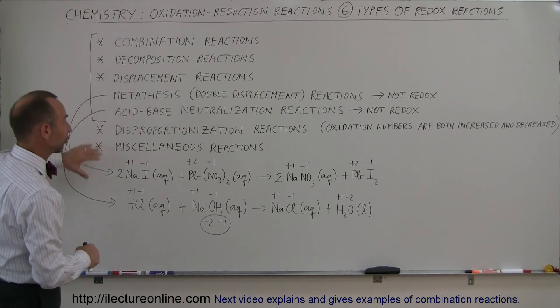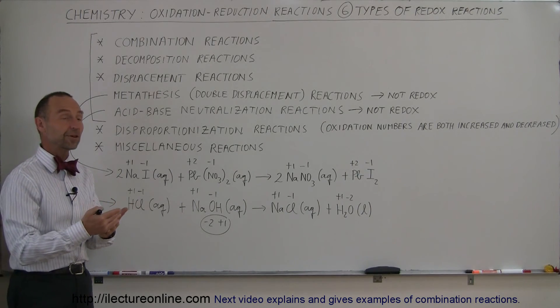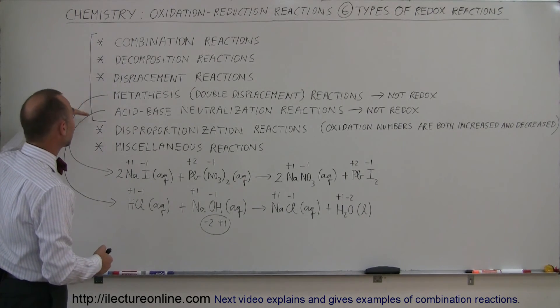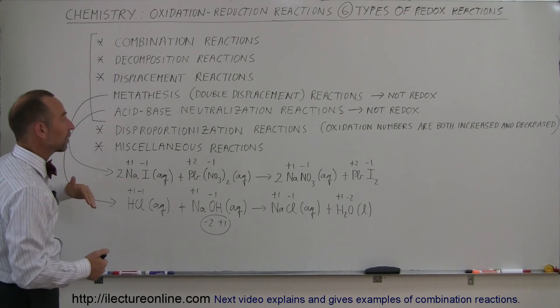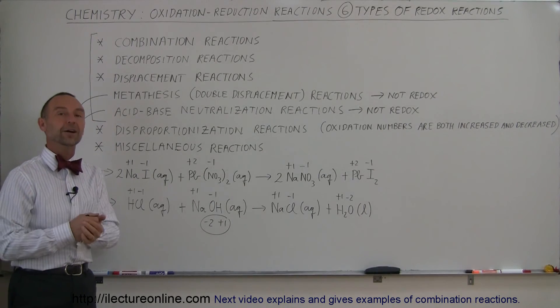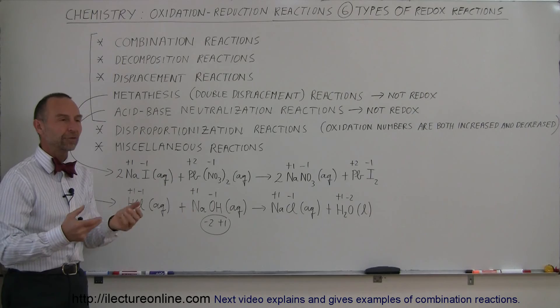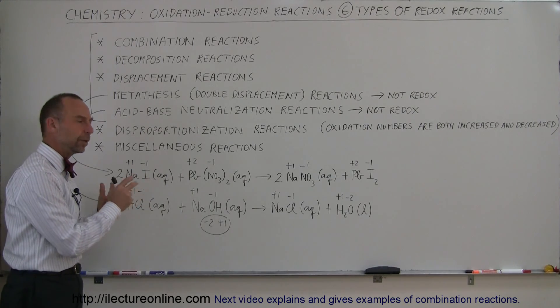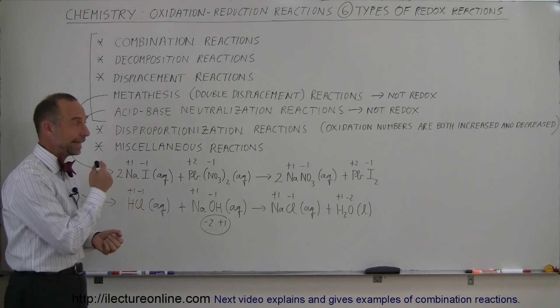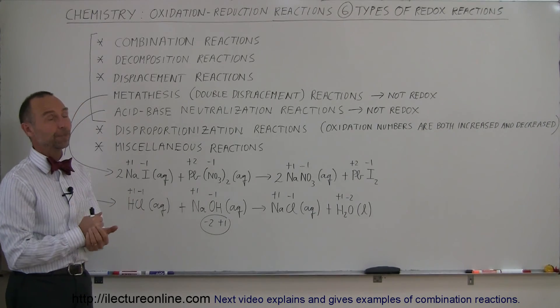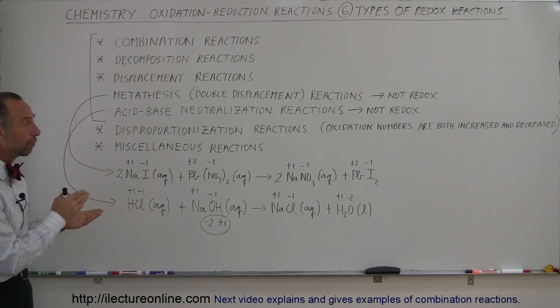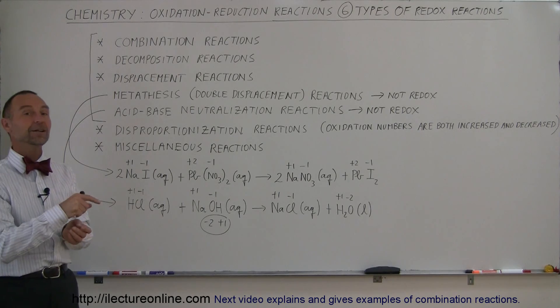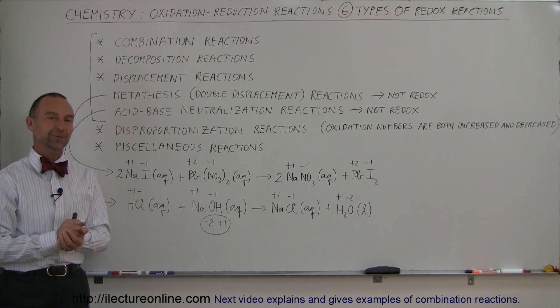What we're going to do now with the next five videos, we're going to take a look at each one of these five types of reactions that are oxidation-reduction reactions and show you why they are. Then we'll show you how to find the balancing of equations using the oxidation numbers in some examples that are coming up as well. There you go. That gives you a nice little overview of the type of reactions that are and type of reactions that are not redox reactions.